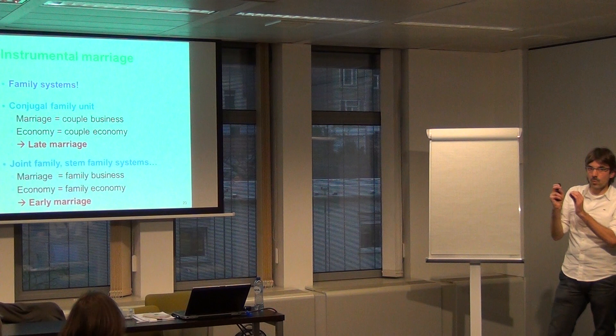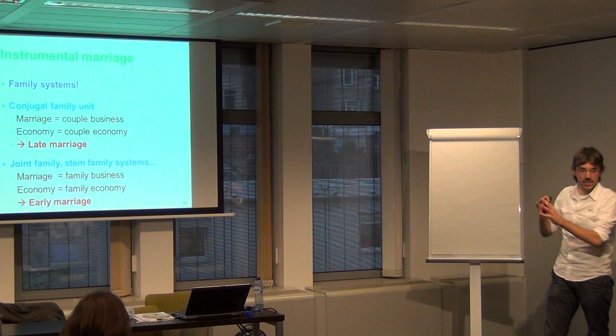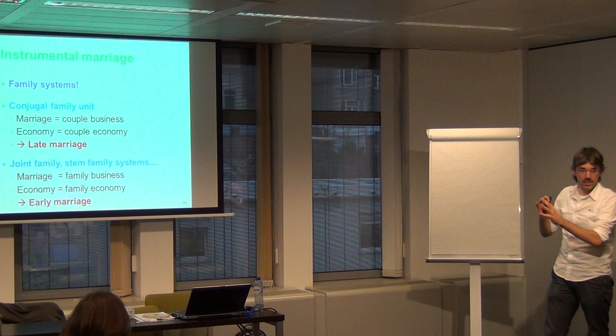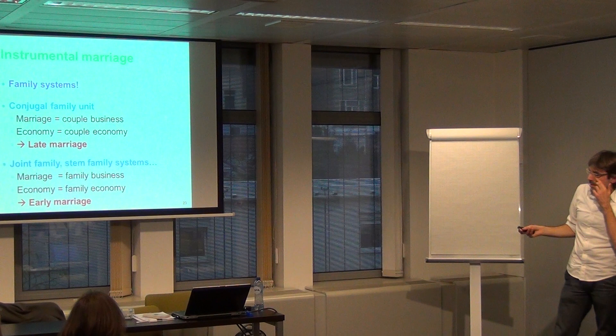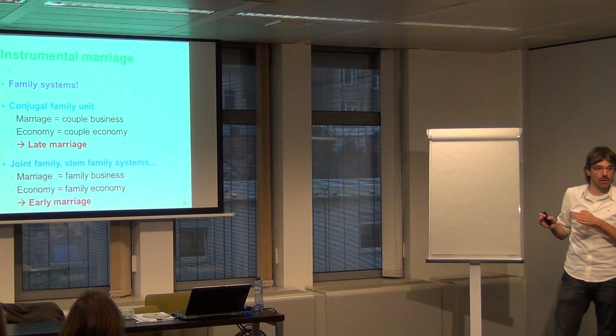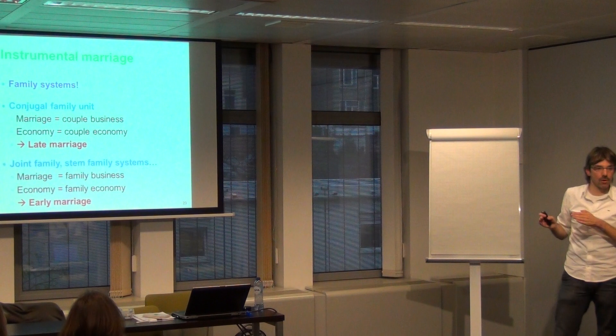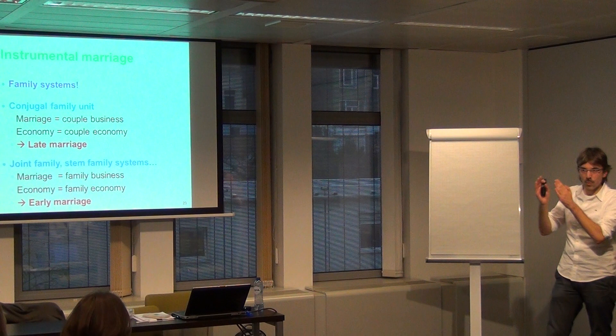Back to our family systems. This is the Western way to do it. In other regions, with other family systems, it's more difficult, or a bit different. We have marriage as a couple business — the economy is a couple economy. Of course, parents influence. But it's a couple economy. You have to do it on your own as a couple. You inherit, etc., but you wait until you have your own economy.